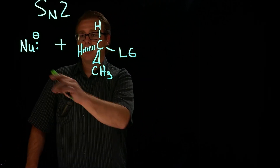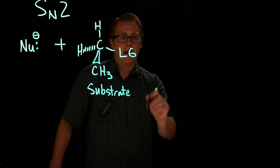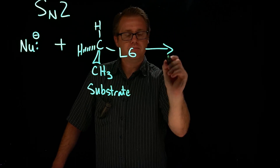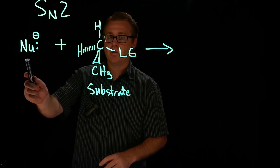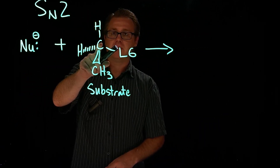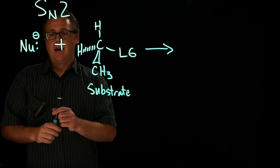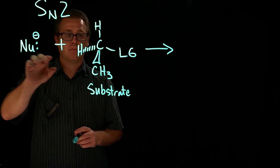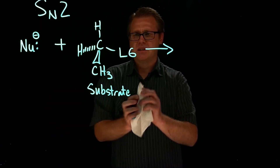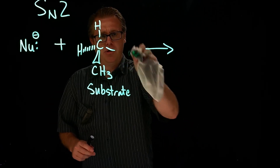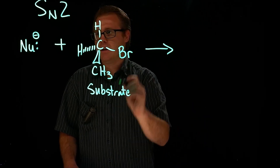So we have our nucleophile and our substrate, and we're going to do a reaction in which our nucleophile is going to attack our electrophile — this carbon right here. Nucleophiles are electron rich. This carbon is the electrophile because it's electron poor. Let's put in an element here — bromine.